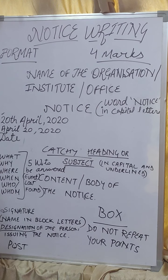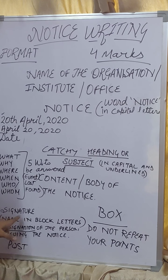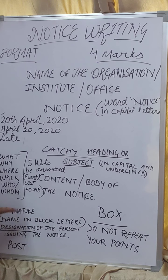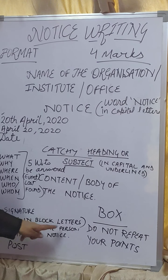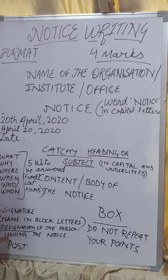What comes next in the format is the signature — the signature of the person issuing the notice. After the signature, write the name in block letters so it is clear who has put up the notice, because signatures are not always readable by everyone. Then write the designation, meaning the post of the person who is issuing the notice.